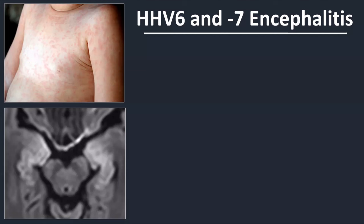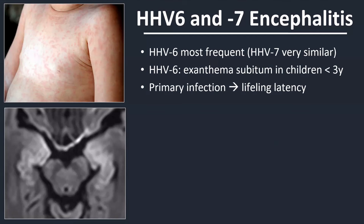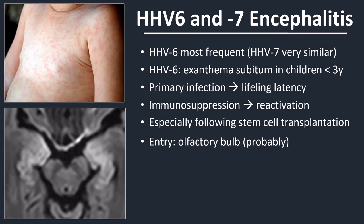So what is human herpesvirus type 6 encephalitis? Human herpesvirus type 6 is the most frequent of the two. It is responsible in very young children for the development of exantema subitum — a viral rash — which is a benign and self-limiting disease. After primary infection, patients develop a lifelong latency. The virus remains in the body but does not cause any pathology. It can reactivate in situations of severe immunosuppression, typically following stem cell transplantation, and causes a limbic encephalitis.